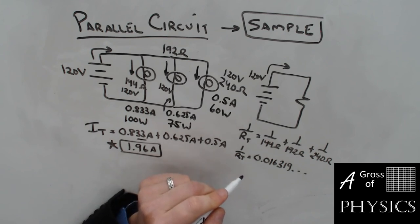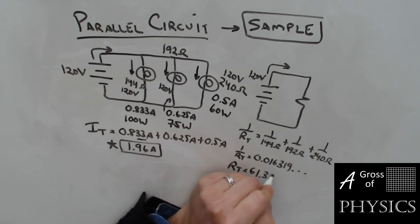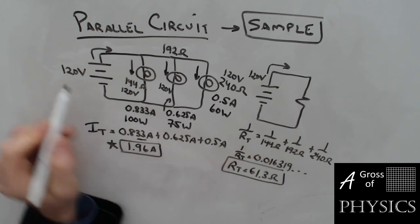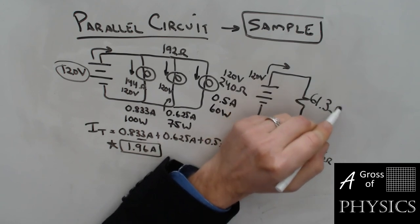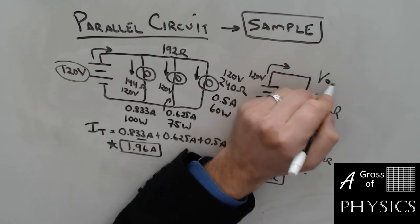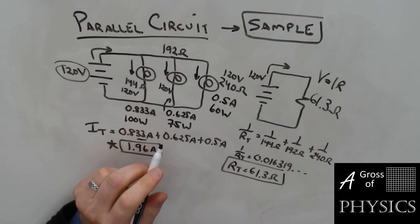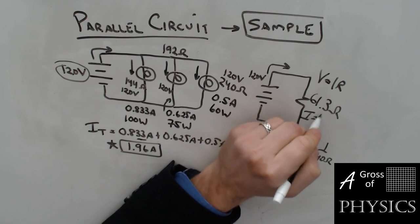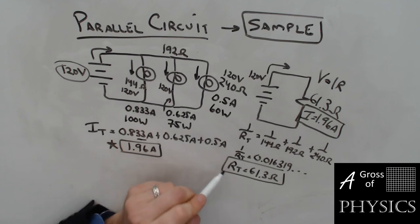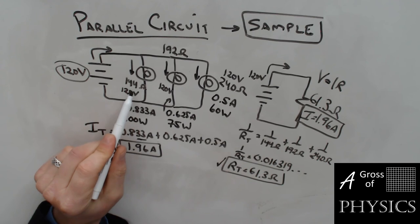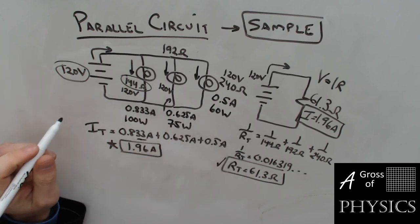Hitting x to the negative 1 on that result gives RT = 61.3 ohms — that's what the power supply sees. Then V = IR gives 120 ÷ 61.3 = 1.96 amps, which matches our earlier sum of branch currents. As a final check: RT of 61.3 ohms is less than the smallest resistor of 144 ohms, and the currents matched — so the calculation is correct.